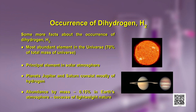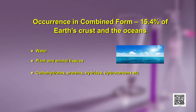If we talk about the abundance by mass in the earth's atmosphere, the abundance is 0.15 percent. Why does it seem so low? Because hydrogen is very lightweight in nature. In the combined forms of occurrence, in the earth's crust and in oceans, it occurs to the extent of 15.4 percent. A vast amount of oceans contain water, and about 70 percent of the surface of our earth is covered by water. Hydrogen is also present in plants and animal tissues and in the human body in the form of carbohydrates, proteins, hydrides, hydrocarbons, and many more such compounds.